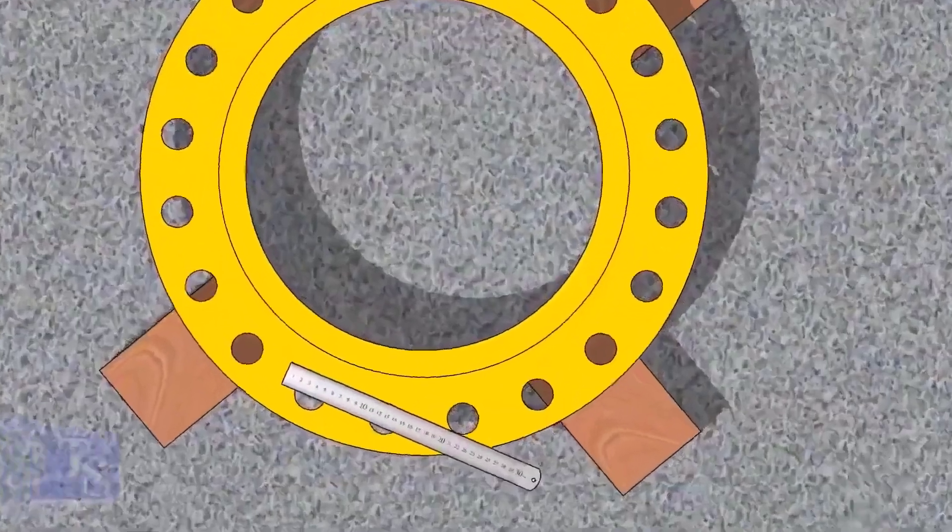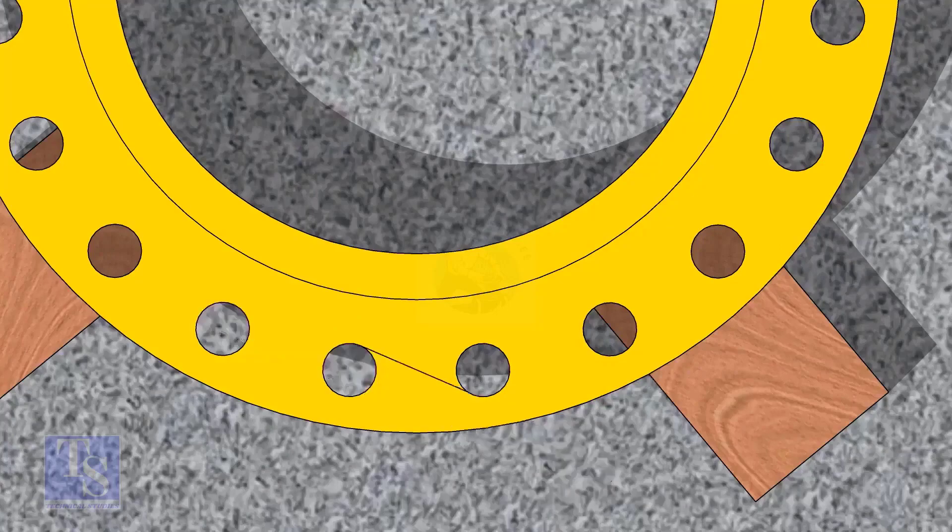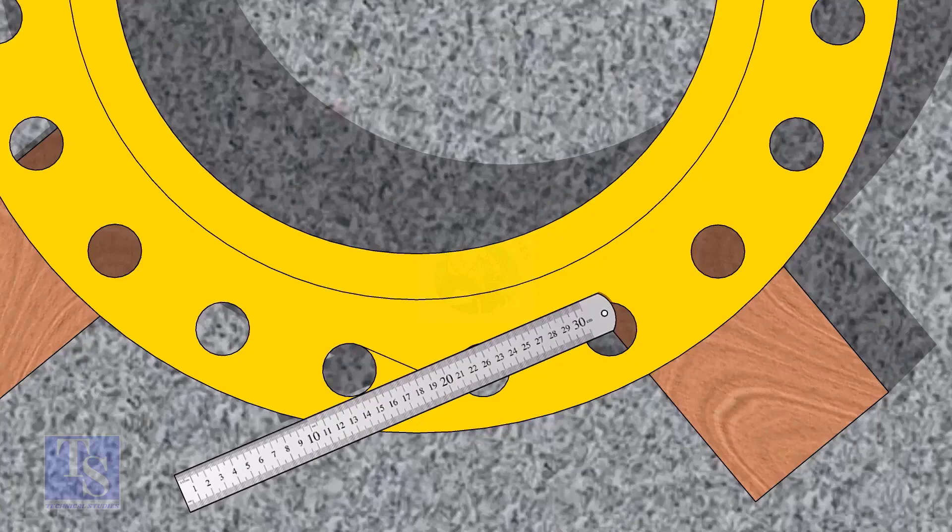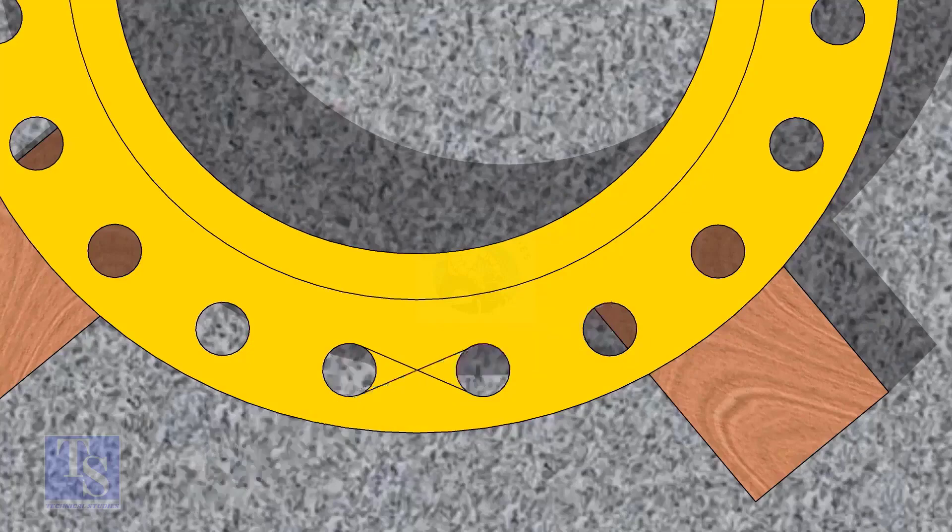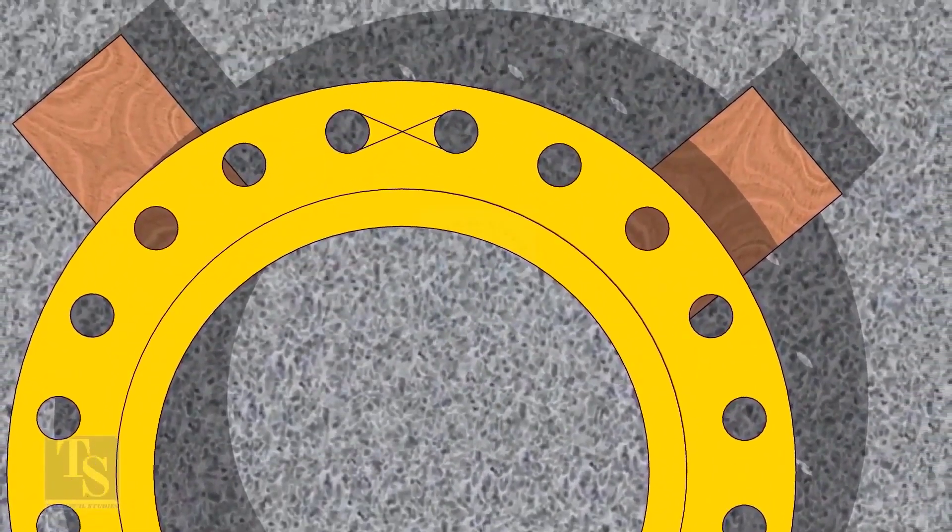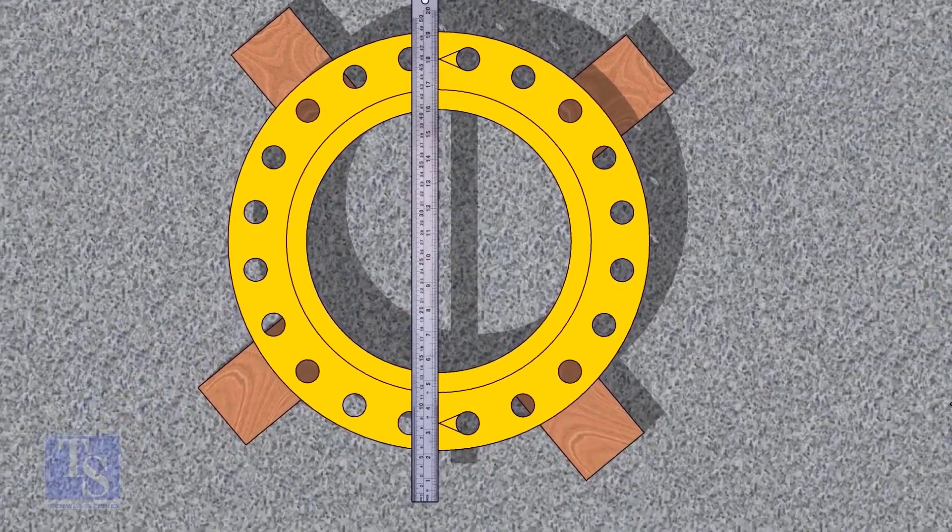Let us mark the center line of the flange. Draw tangential lines of two adjacent holes. The intersection of the lines is the center of these holes. Draw the center of the two holes on the opposite side.